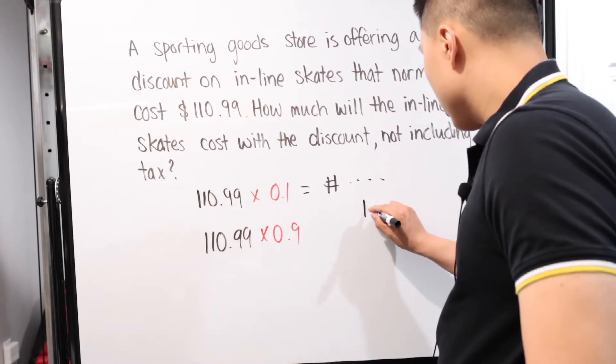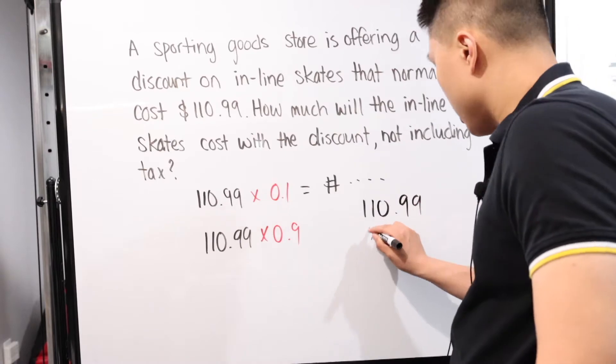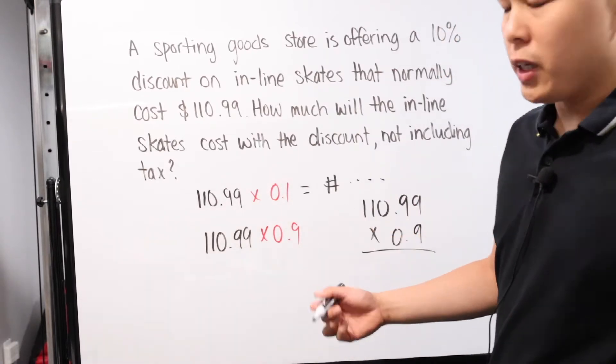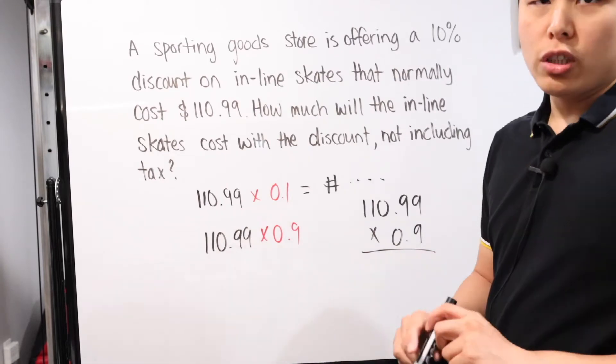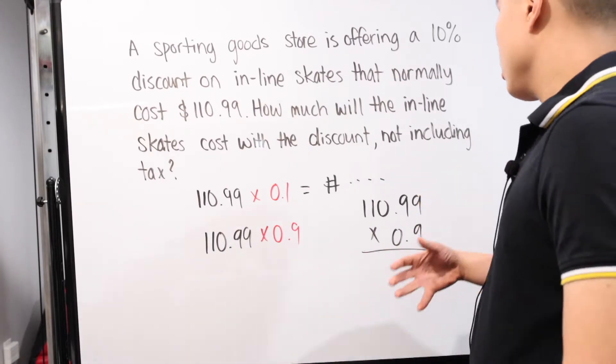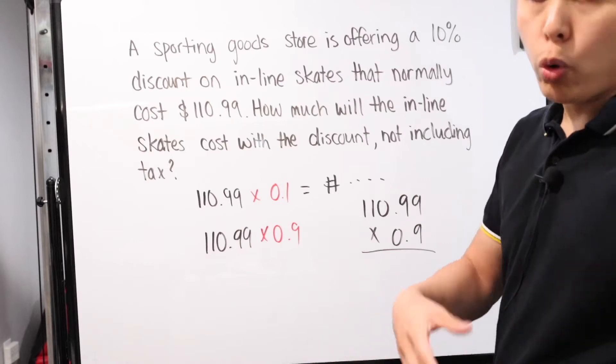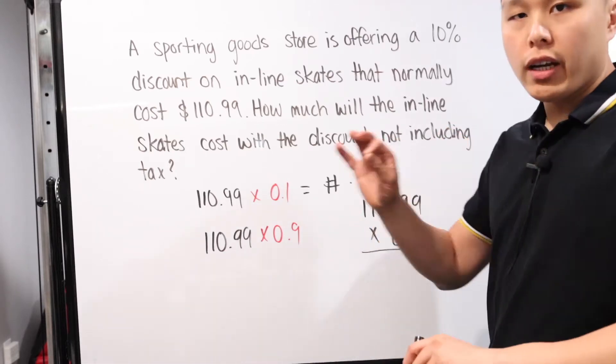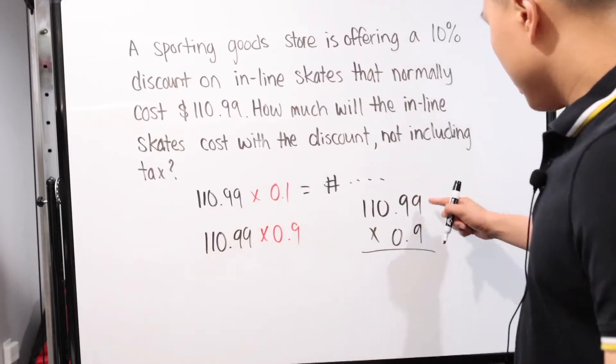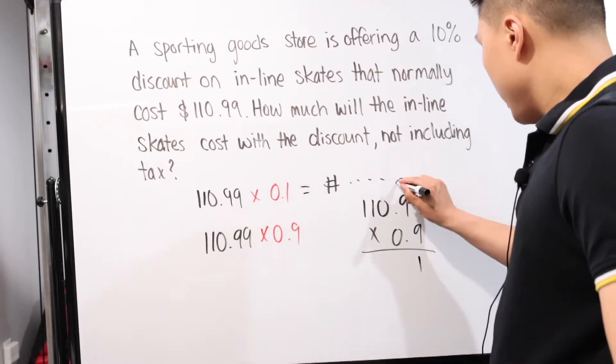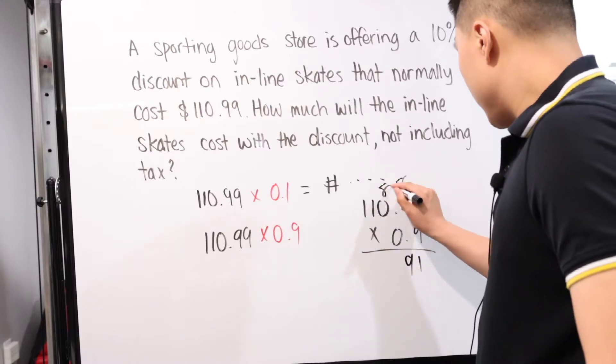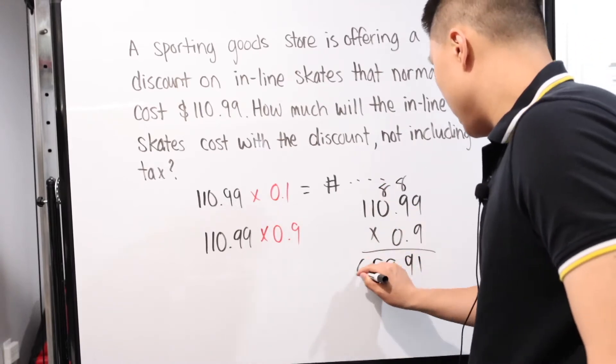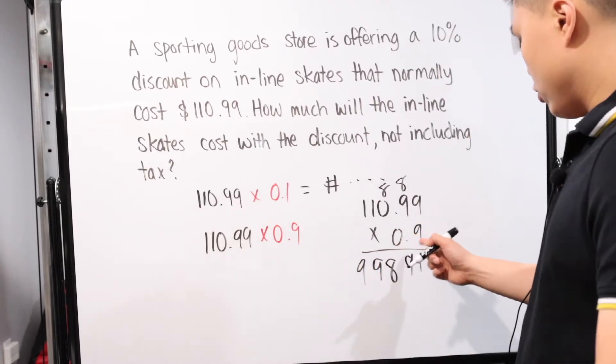There's many ways to go about it. One way is just to figure out 10% and then subtract it. So you would just do 110.99 times 0.1 or just 10% in decimal form. And then you would get your number and then subtract it, which is fine. A more simplified approach is basically you would have 110.99 times 0.9.